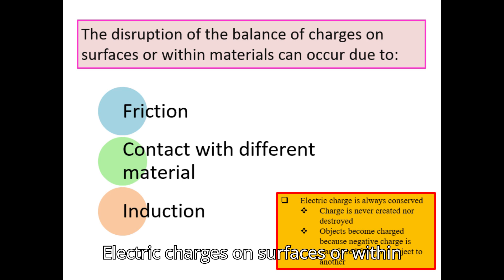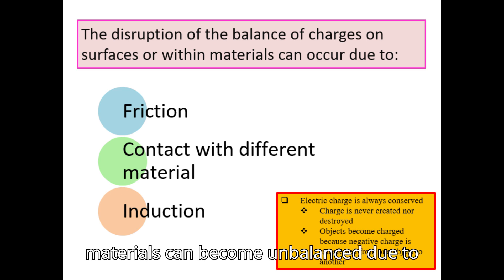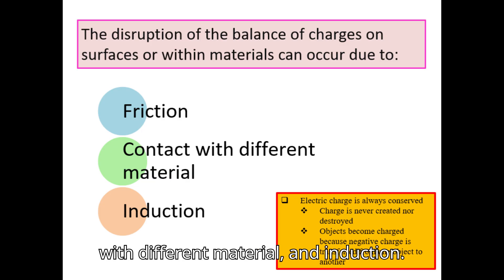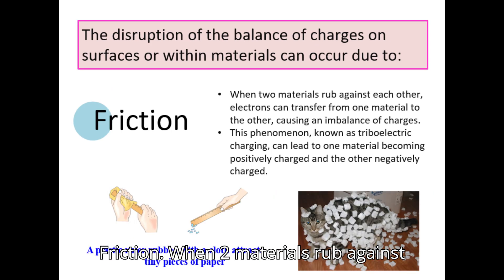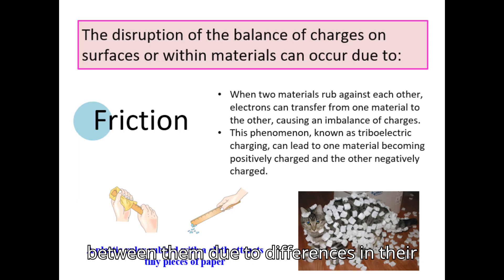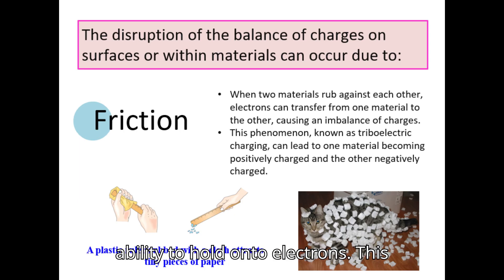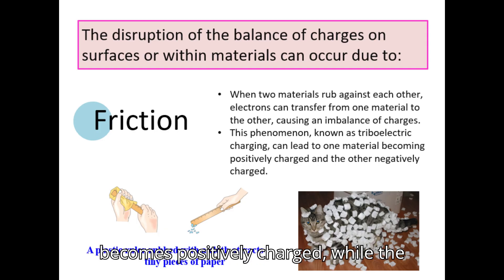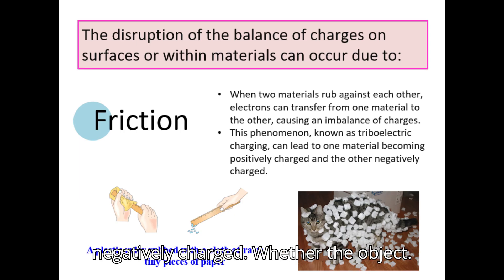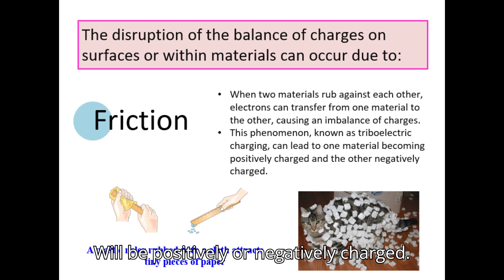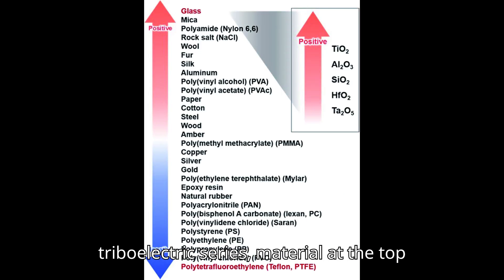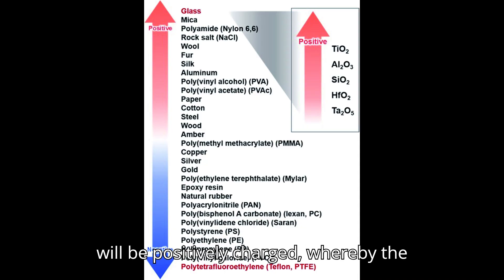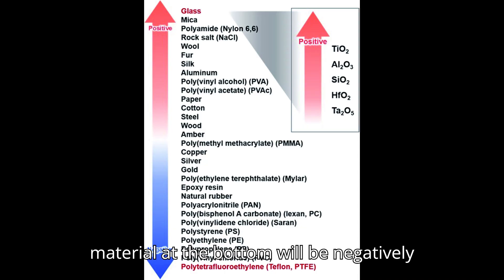Electric charges on surfaces or within materials can become unbalanced due to three main processes: friction, contact with a different material, and induction. With friction, when two materials rub against each other, electrons can transfer between them due to differences in their ability to hold onto electrons — a process known as triboelectric charging. One object loses electrons and becomes positively charged, while the other gains electrons and becomes negatively charged. Whether an object will be positively or negatively charged depends on its position in the triboelectric series: material at the top will be positively charged, while material at the bottom will be negatively charged.